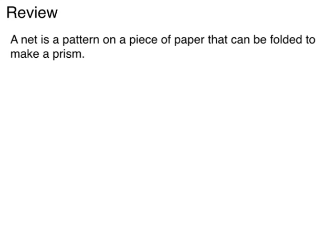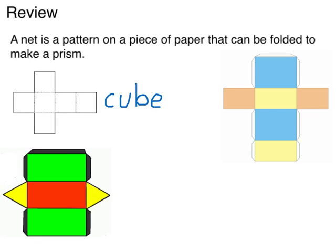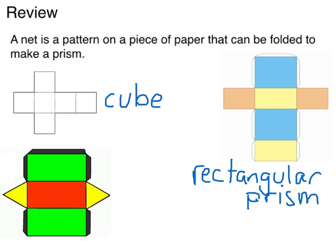Remember, a net is simply a pattern on a piece of paper that can be folded to make a prism. Let's look at some of the examples of nets that we looked at today. Here we have a cube, a rectangular prism, and a triangular prism.